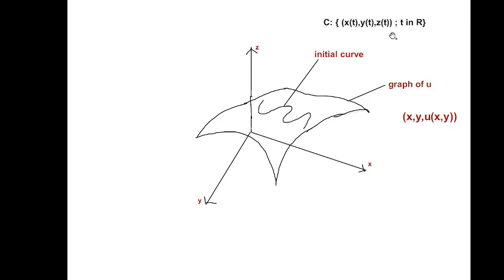The curve is given parametrically as (x(t), y(t), z(t)), where t is a real parameter. Our problem is to find an integral surface which contains the given initial curve, and such that at every point (x, y) on this surface, the vector (A, B, C0 u + C1) lies in the tangent plane.